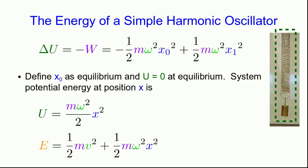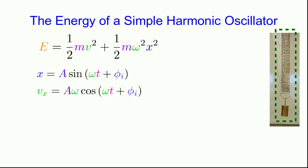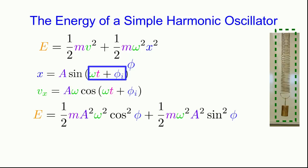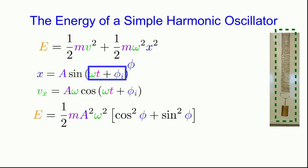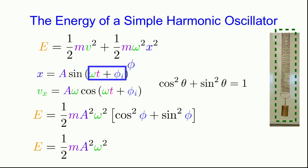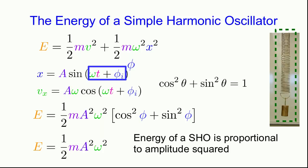The total energy is kinetic energy plus this potential energy. Substituting the expressions for position (A sine phi) and velocity (A omega cosine phi) into the energy expression and pulling out common factors, we get one-half m omega squared A squared times (cosine squared phi plus sine squared phi). By the identity cosine squared plus sine squared equals one, this simplifies to the lovely expression: energy equals one-half m omega squared A squared. The energy of a simple harmonic oscillator is proportional to the square of its amplitude.